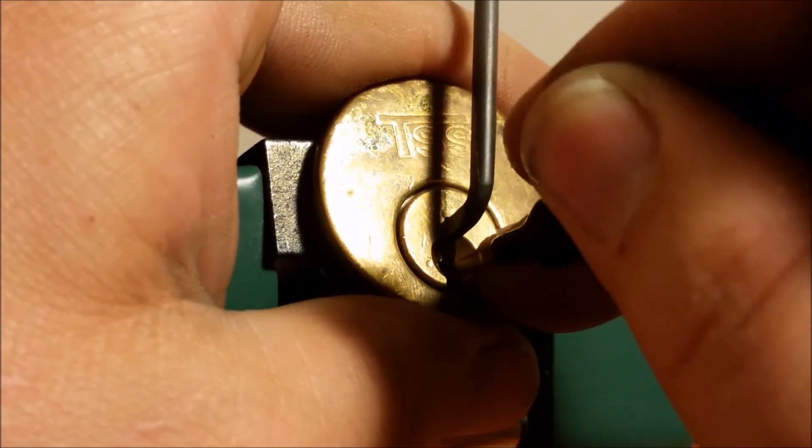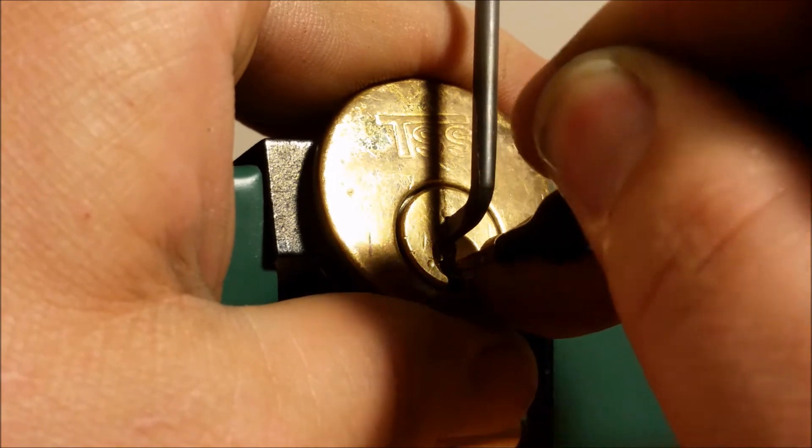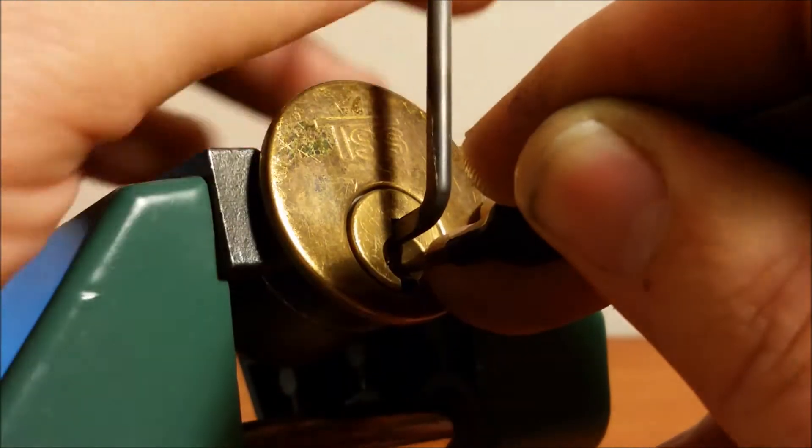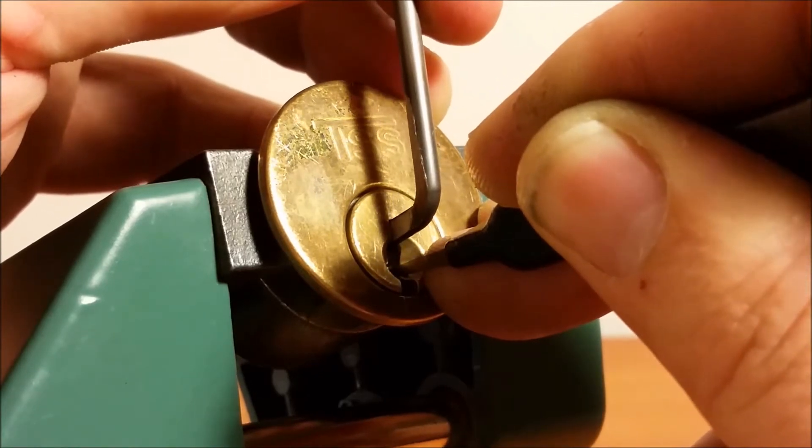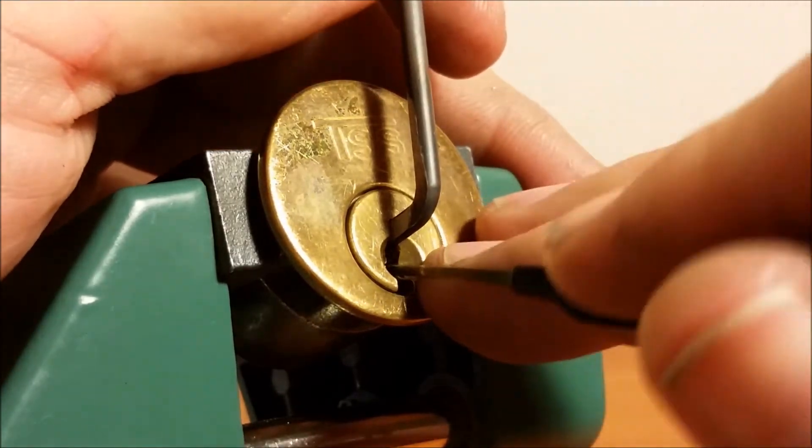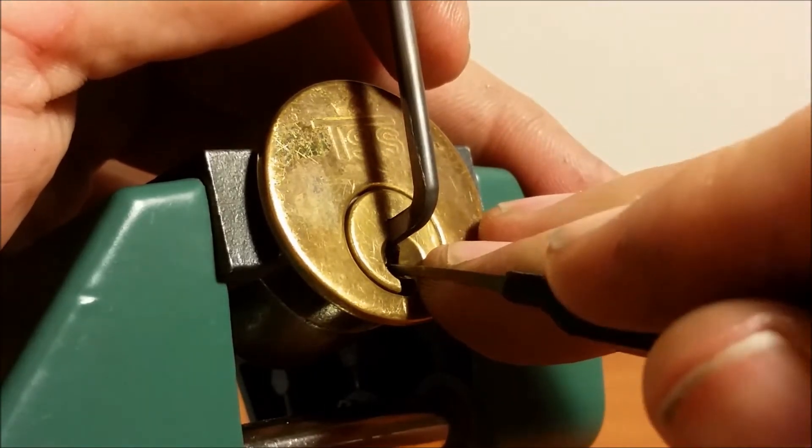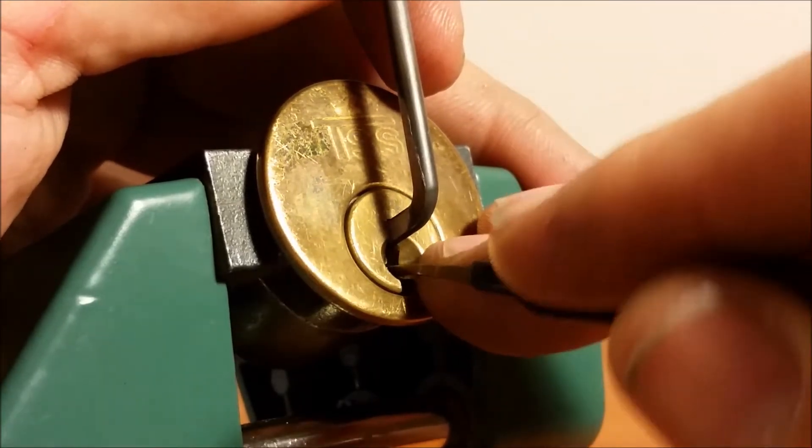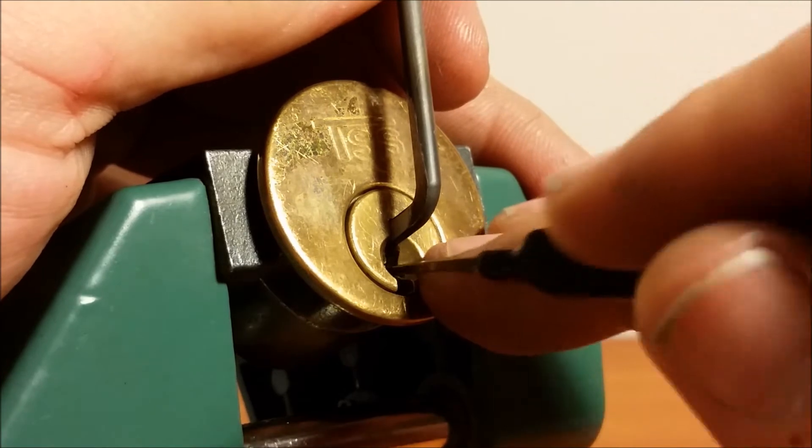A little counter rotation on five. Five went up. I'm gonna bounce on the pins on my way back forward. This doesn't feel like stock. Counter rotation on two now. And I've lost my false set. What in the world is going on with this? This definitely ain't stock.